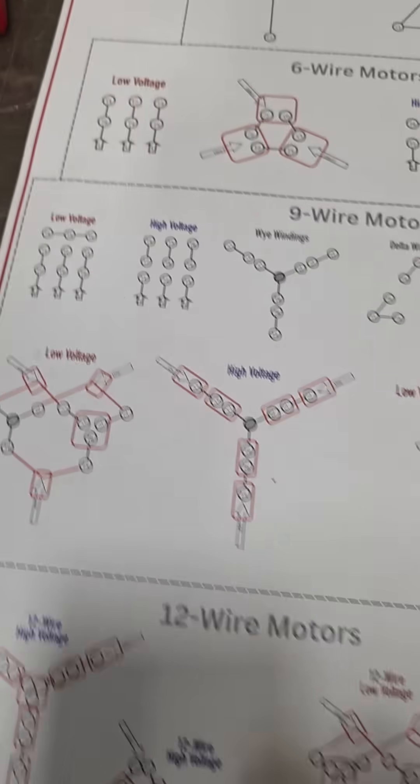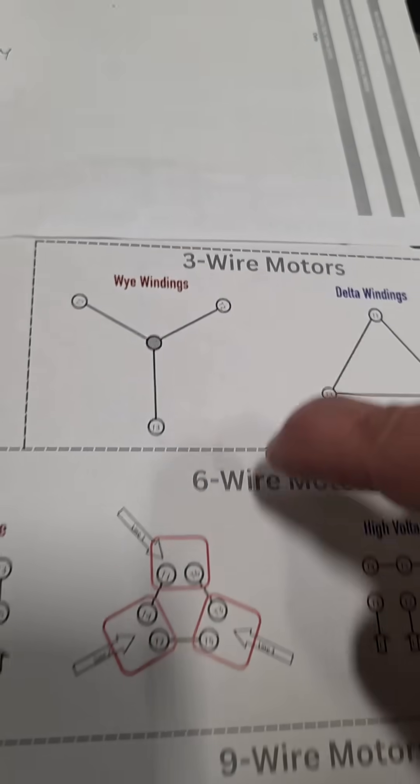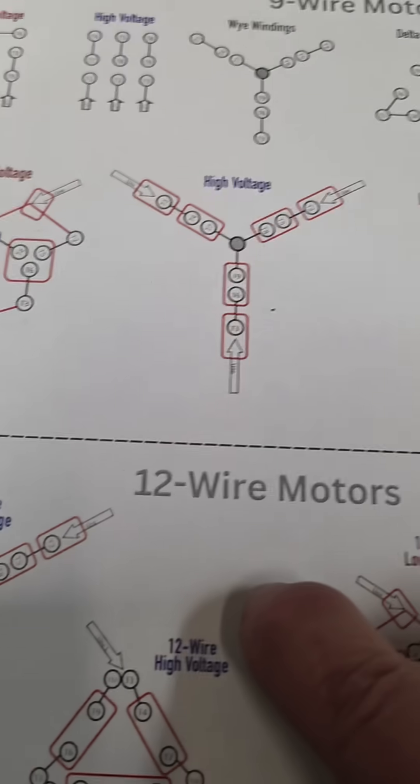And in this case, it's written right here on the motor. These are the instructions on how to wire this bad boy to high and low voltage. All I really had to do was print out this diagram, which shows you how to wire three wire, six wire, nine wire, and 12 wire motor.